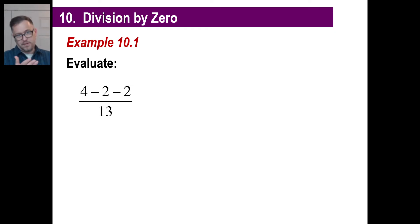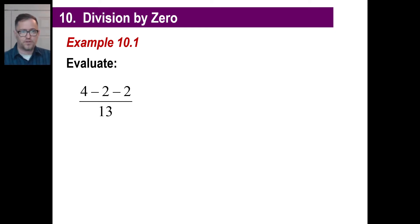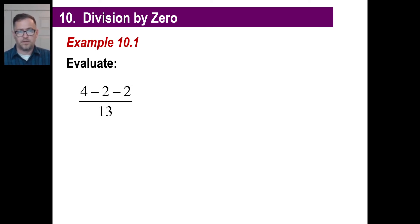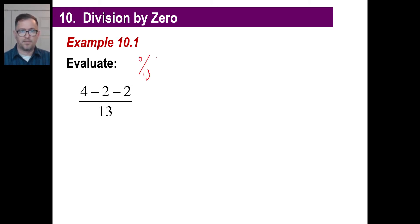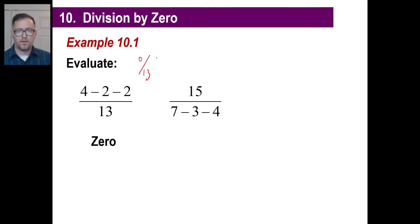If you look at this and go, we have a fraction — 4 minus 2 minus 2, over 13. Well, what's the numerator turn out to be? Zero, right? So we got zero divided by 13, and the answer to that is, how many 13's go into zero? Well, zero.